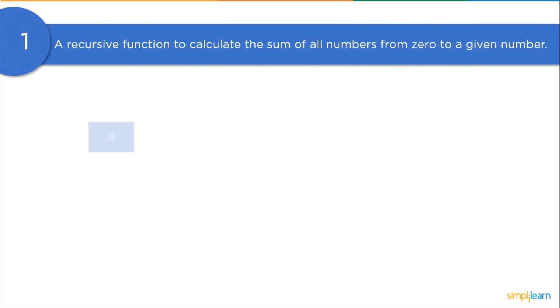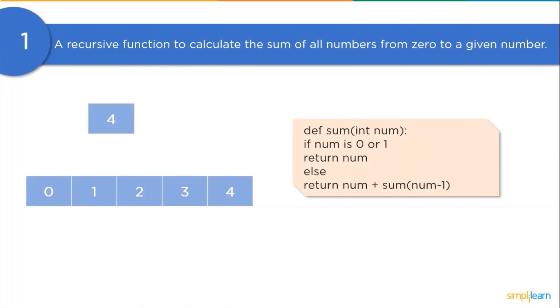We will calculate the sum of numbers from 0 to a given number. We will start with creating a function sum. In the function definition, we will first check if the given number is 0 or 1, and then return the number. Else, we will return the addition of that number with the recursive sum function called with n-1 as an argument. Now let's try it in the code editor.